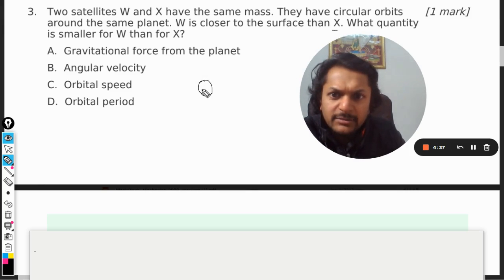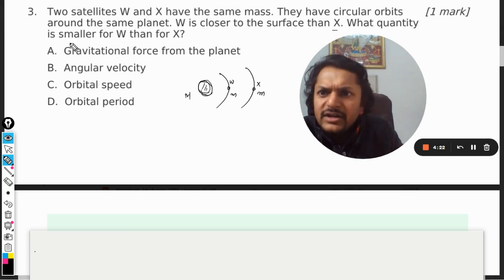First of all, let us make this diagram otherwise things will be very confusing. So this is the planet and there are two satellites, and they have the same masses M and M. W is closer and X is farther. What quantity is smaller for W than for X?